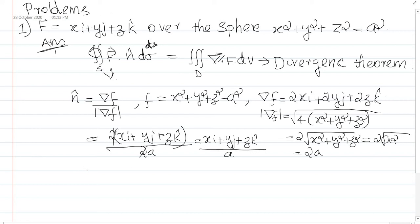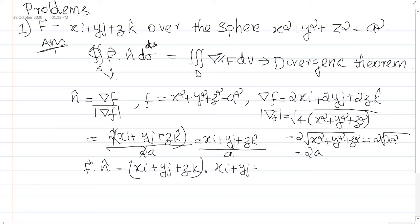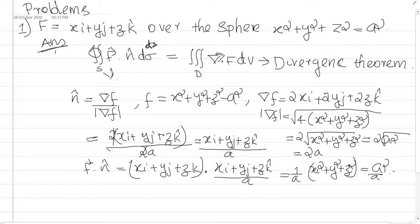Next we find F dot n. F = xi + yj + zk, and n = (xi + yj + zk)/a. So F·n = (1/a)(x² + y² + z²) = a² / a = a.